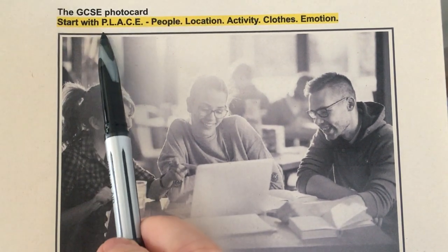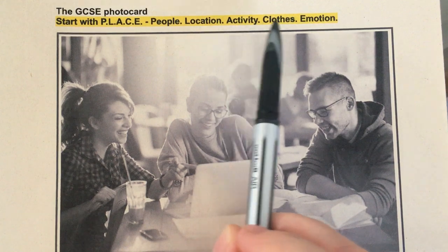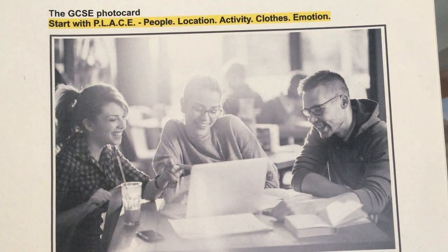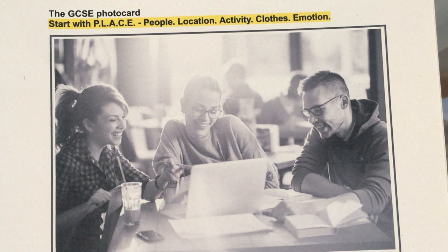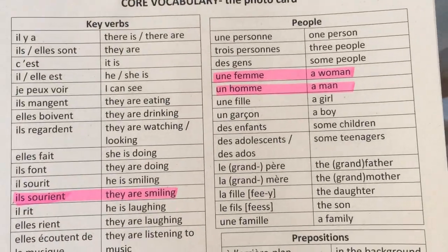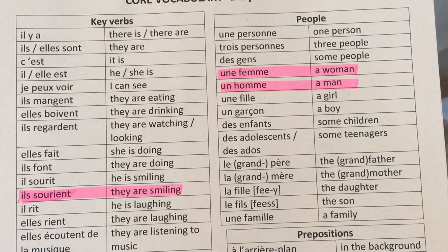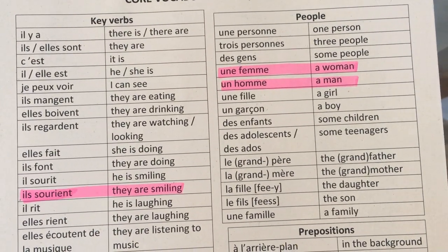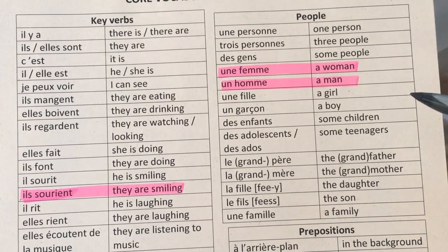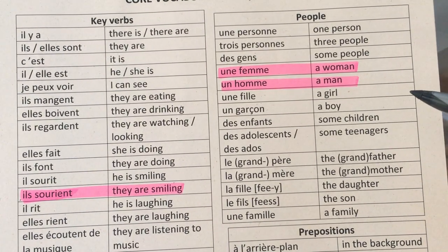We have come up with an acronym: PLACE — People, Location, Activity, Clothes and Emotion — as a sort of jumping off point for your description of the photo card. In your booklet you have also got a list of core vocabulary specifically linked to a photo card, and I have highlighted some of the vocabulary I want to use when describing this card.